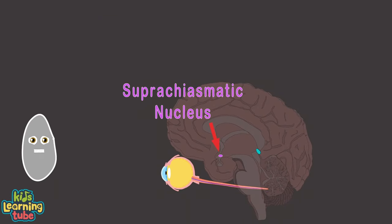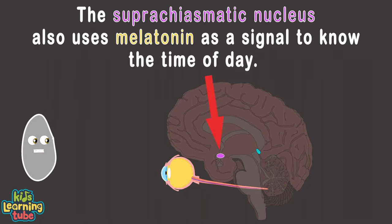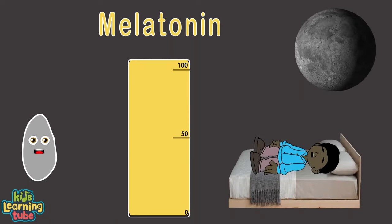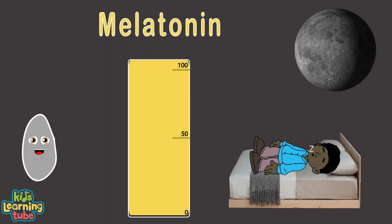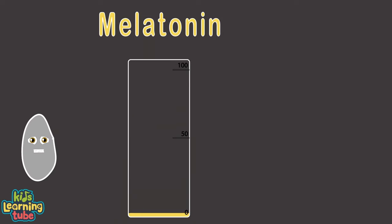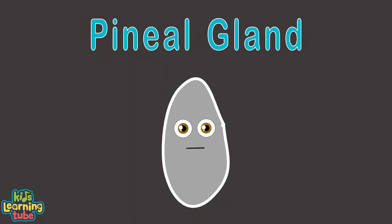The nucleus and the pineal work hard hand in hand. The suprachiasmatic nucleus functions to control circadian rhythms. It also uses melatonin as a signal to know the time of day. When melatonin levels are at their highest in the darkest hours of the night, that signals the circadian rhythms to be in a nocturnal stage, keeping you asleep until the break of day. Then your melatonin levels drop dramatically to keep you awake during the day. Your pineal gland is important, so please take care of it so you can enjoy life while rested and carefree.